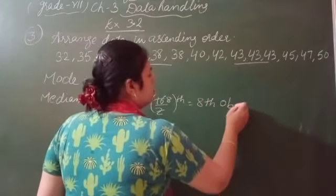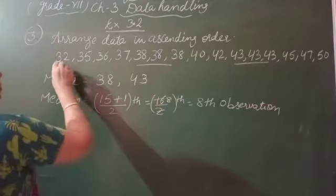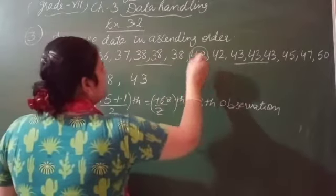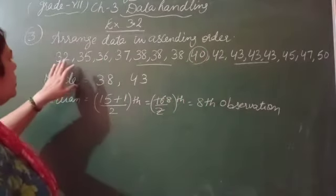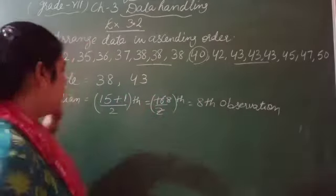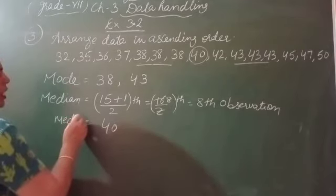What is the 8th observation in our data? Now check the data. Counting: 1, 2, 3, 4, 5, 6, 7, 8. So our 8th value is 40. Your median is 40. Median hamarah ketna a gya? 40.